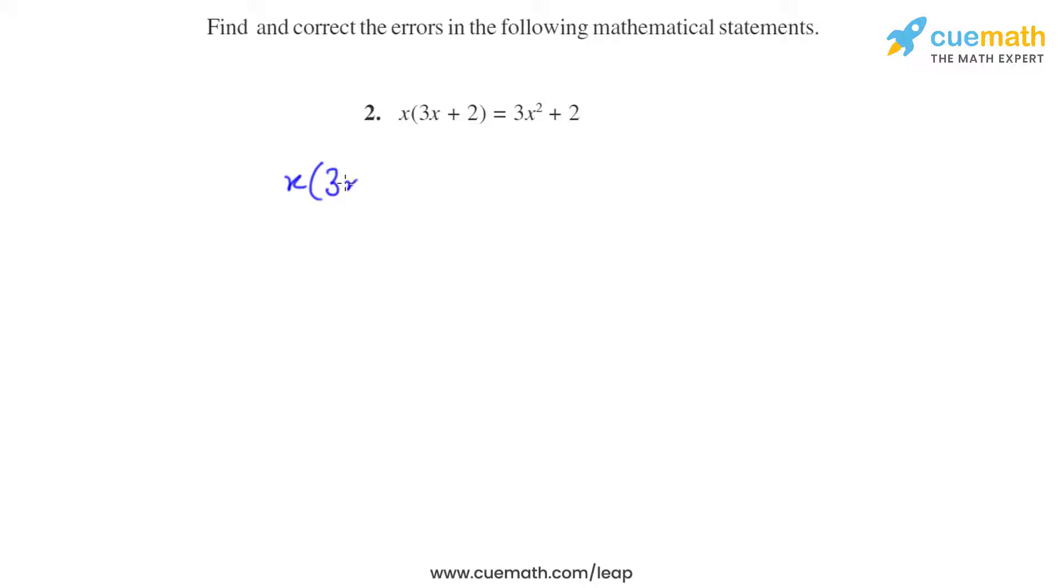For example, this one: x gets multiplied with 3x, becomes 3x squared, which here is also correct. Then x times 2, the answer should be 2x, not 2.